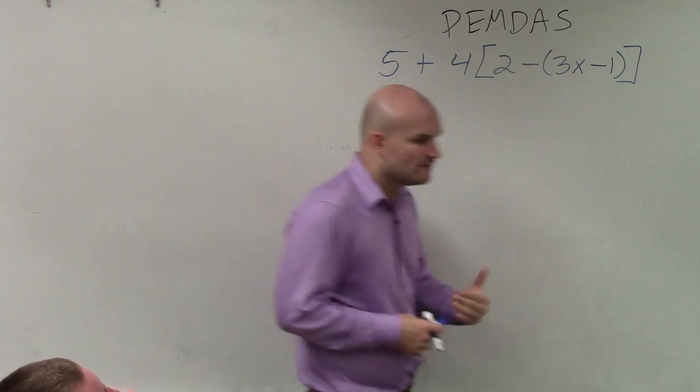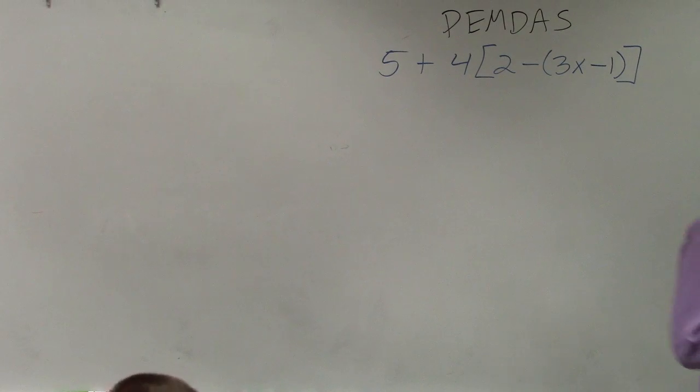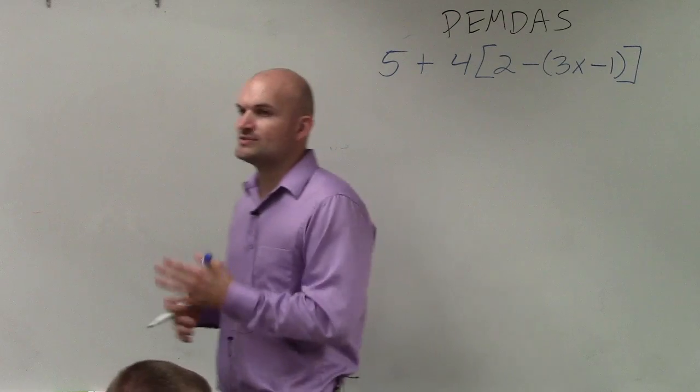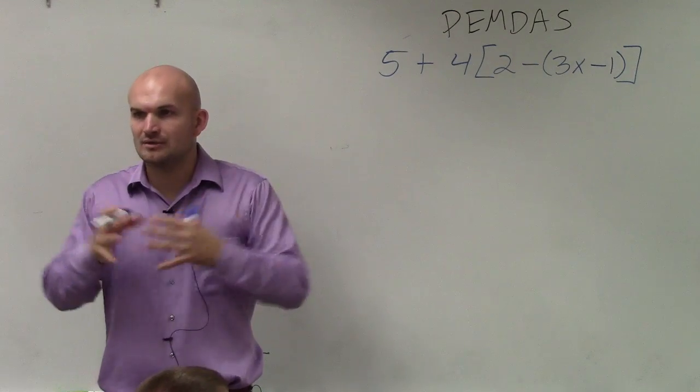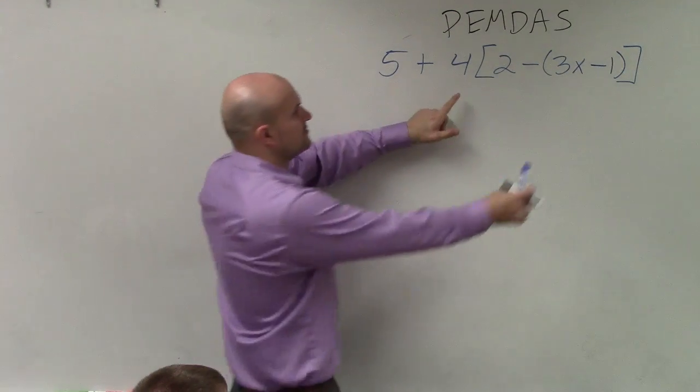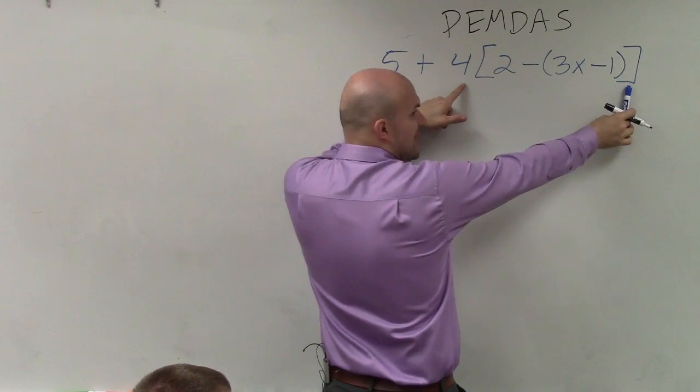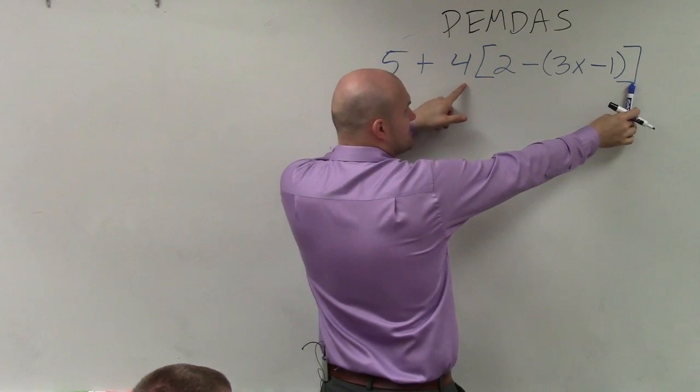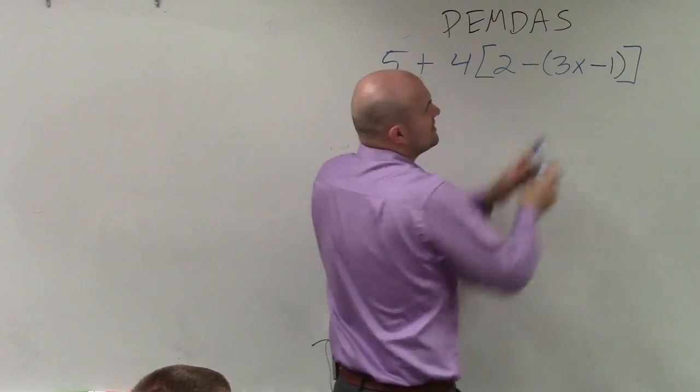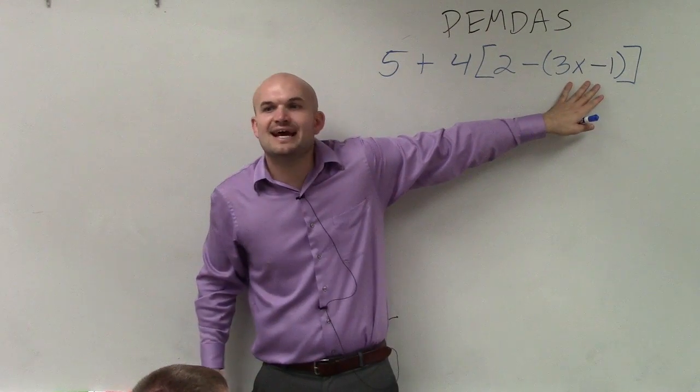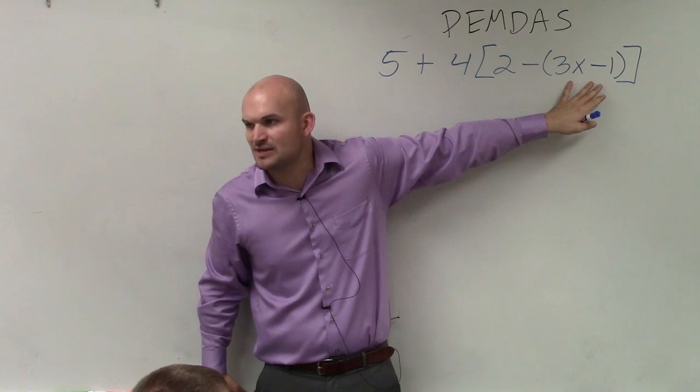Now, what order of operations tells us is inside your parentheses, that's what we want to simplify first. Well, we always want to look from the inner to outer. So we have brackets, which is like parentheses. But do we have more parentheses inside the brackets? Yes. So then we go inside this parentheses right here. And we say, can I simplify anything inside those parentheses?